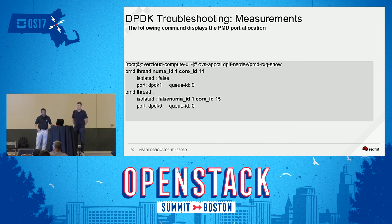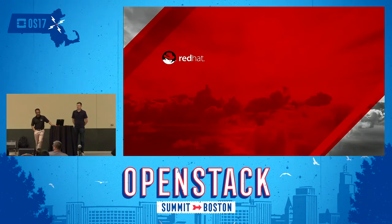Lastly, this command displays the PMD port allocation — showing that on NUMA node 1, cores 14 and 15 are being used. I think that's all I had — if you have any questions we can take them now.